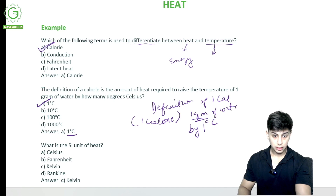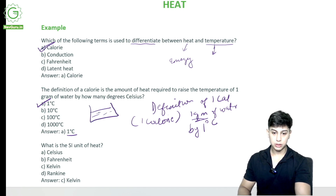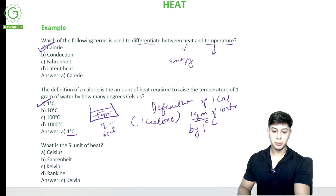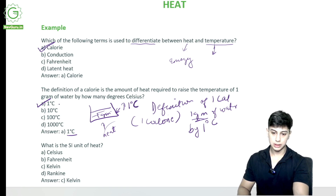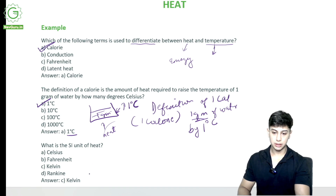If I have a beaker with one gram of water in it and I give it heat to raise its temperature, how many calories do I require so that this temperature is increased by one degree Celsius? The answer is one degree Celsius. Now, what is the SI unit of heat? What is the SI unit of temperature?